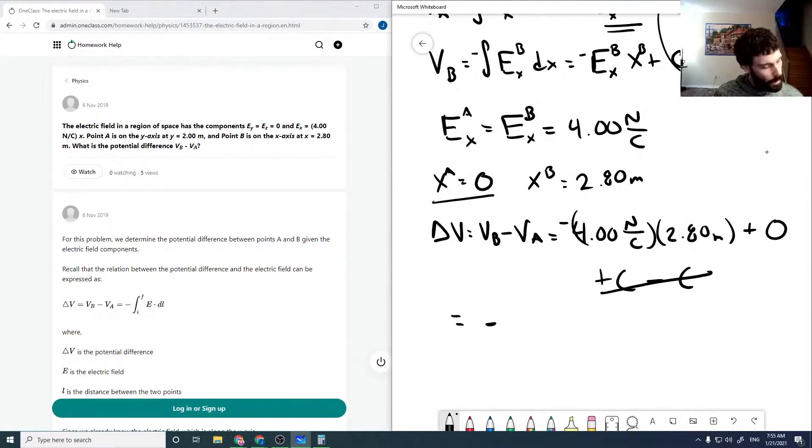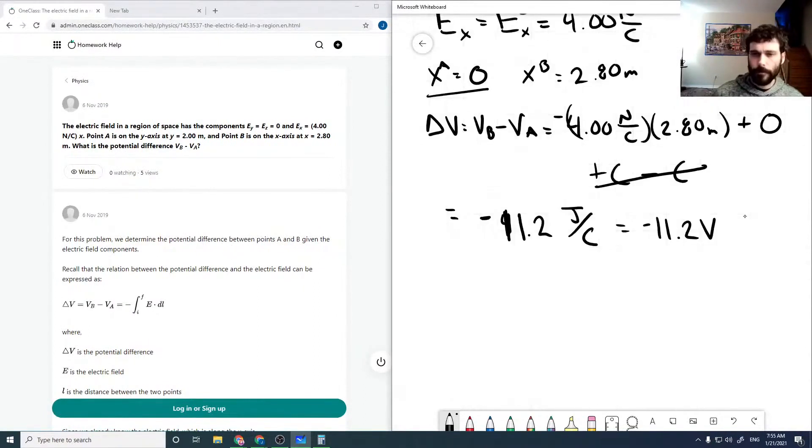And then this would be minus 4... minus 11.2 joules per coulomb. So our delta V is minus 11.2 volts.